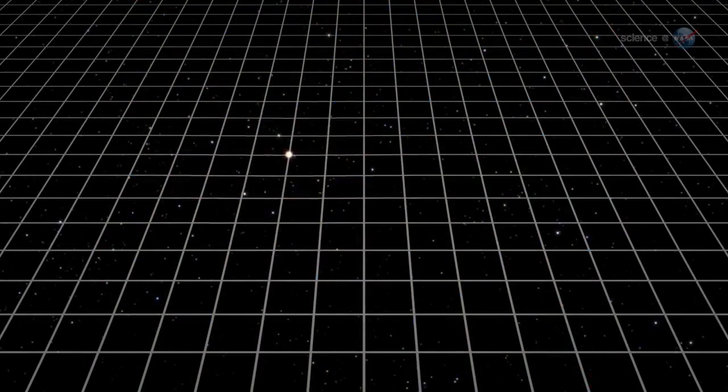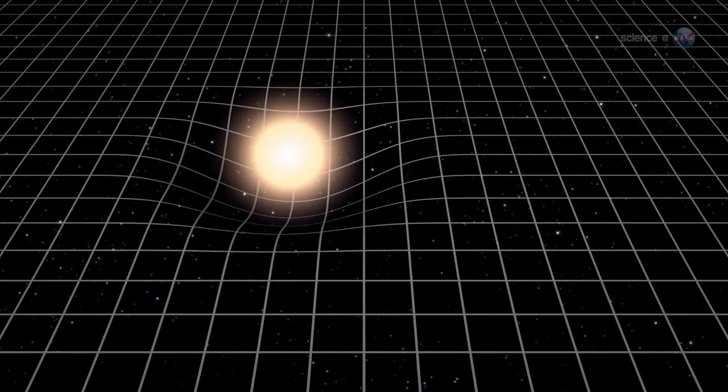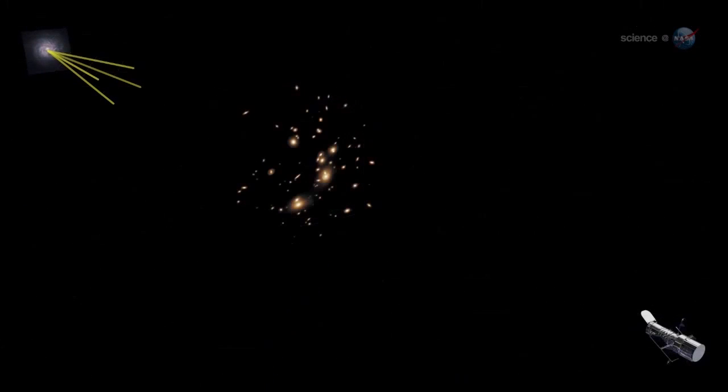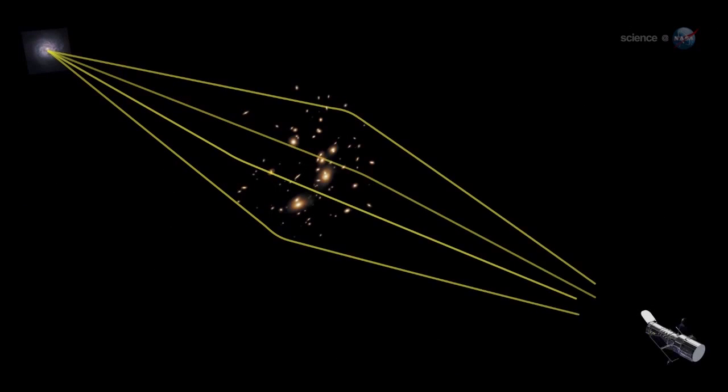As predicted by Einstein's theory of general relativity, the mass of the cluster warps the fabric of space around it. Starlight passing by is bent and images are magnified, much like an ordinary lens except on a vastly larger scale.